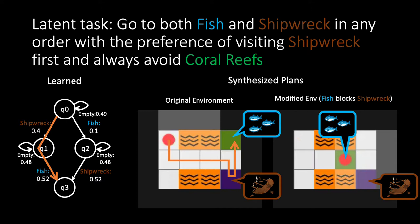We modify the environment so that the fish blocks the shipwreck. Notice that the path has changed to visit the fish first and then shipwreck. It computes the most preferred plan which is the correct behavior.